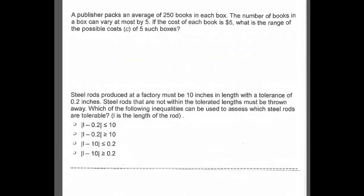Let's look at an example. A publisher packs an average of 250 books in each box. The number of books in a box can vary at most by 5. If the cost of each book is $5, what is the range of possible costs of 5 such boxes?